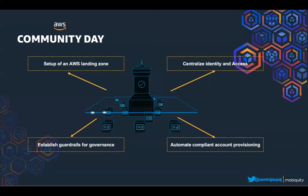Landing zone is a well-architected multi-AWS account environment based on security and compliance best practices — the enterprise-wide container that holds all organization units, accounts, users, and resources. Guardrails are high-level rules that provide ongoing governance for your AWS environment. There are two kinds of guardrails: preventive and detective. Account Factory is a configurable account template that helps you standardize the provisioning of new AWS accounts. Control Tower offers a built-in AWS Account Factory that helps you automate the account provisioning workflow in your organization with automation templates.